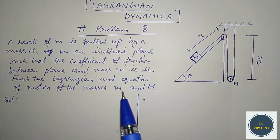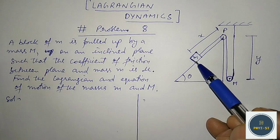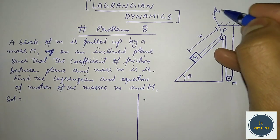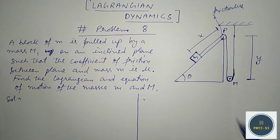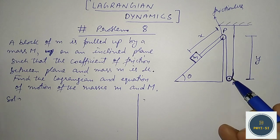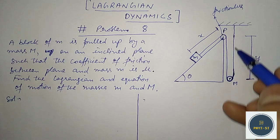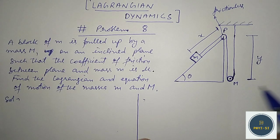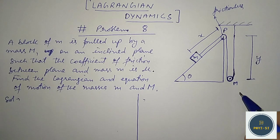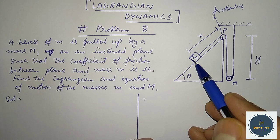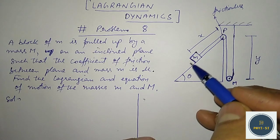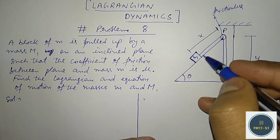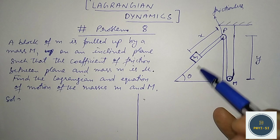In this problem, we have a mass on an inclined plane connected via a frictionless pulley and via a string to another mass, which is also a movable pulley. This string is finally connected to a rigid support. Now, this mass M is much greater than mass m, so the small mass can go over the inclined plane.